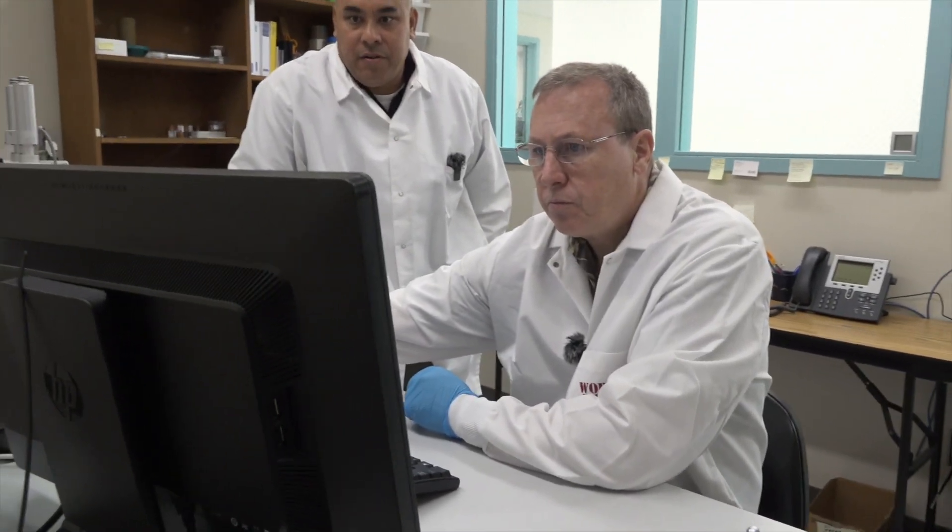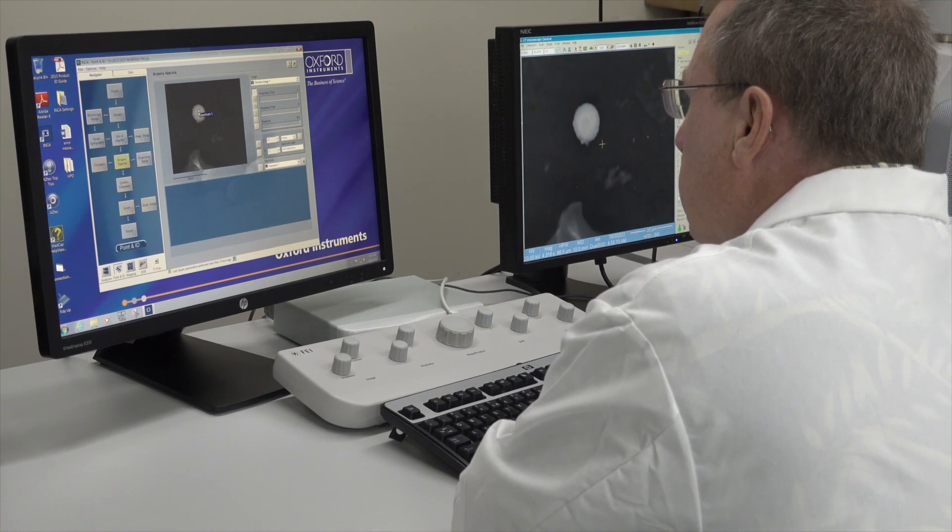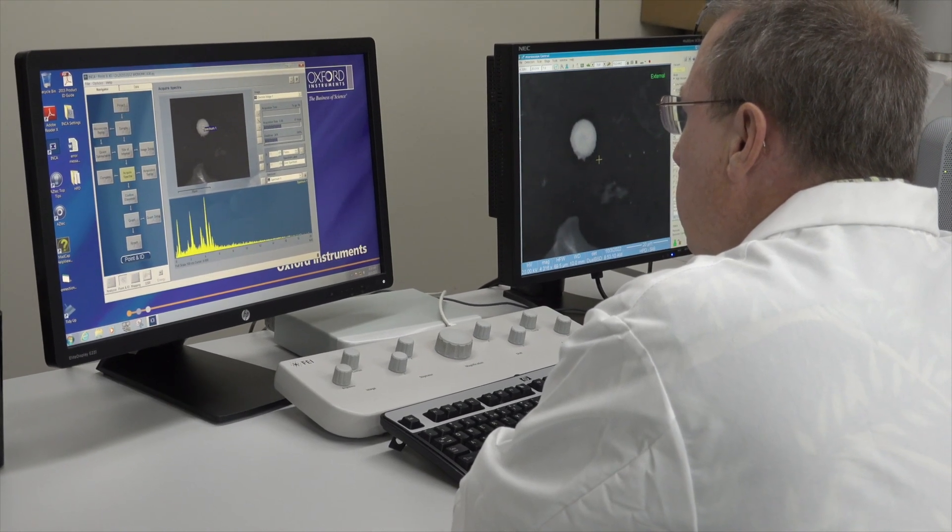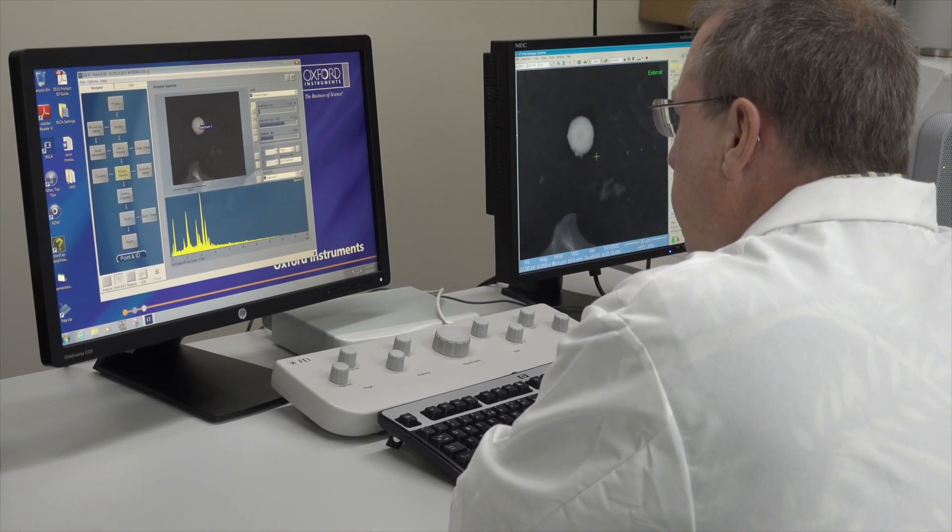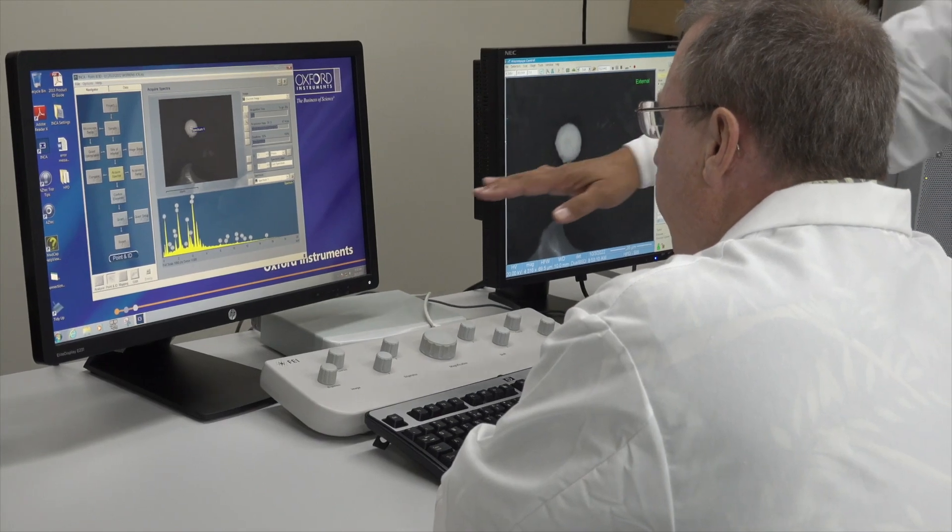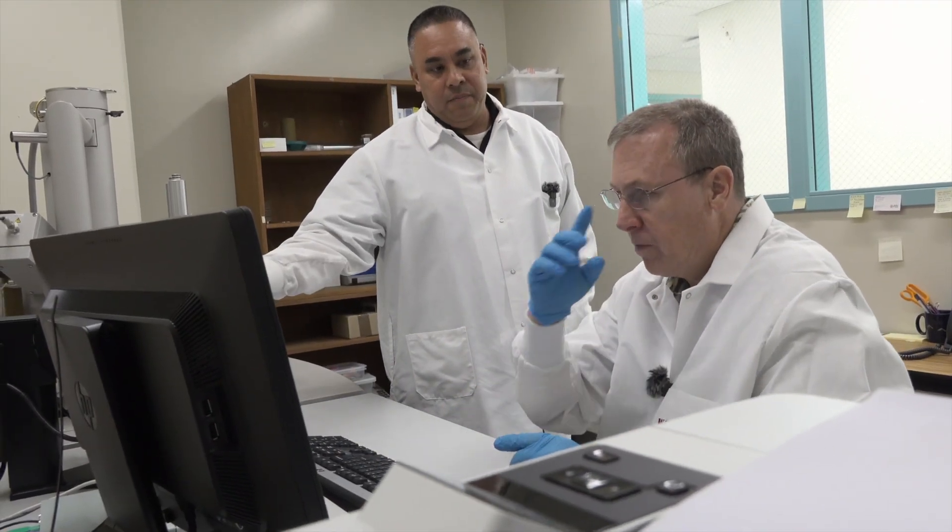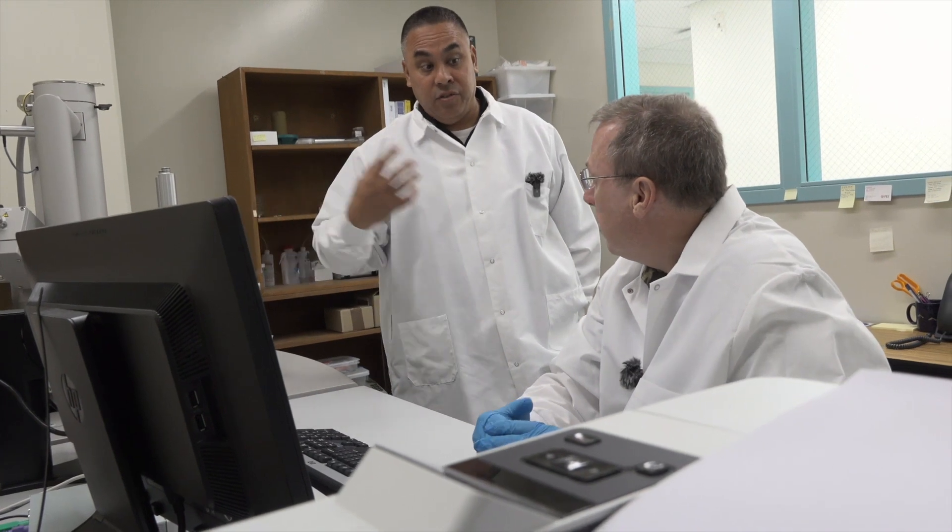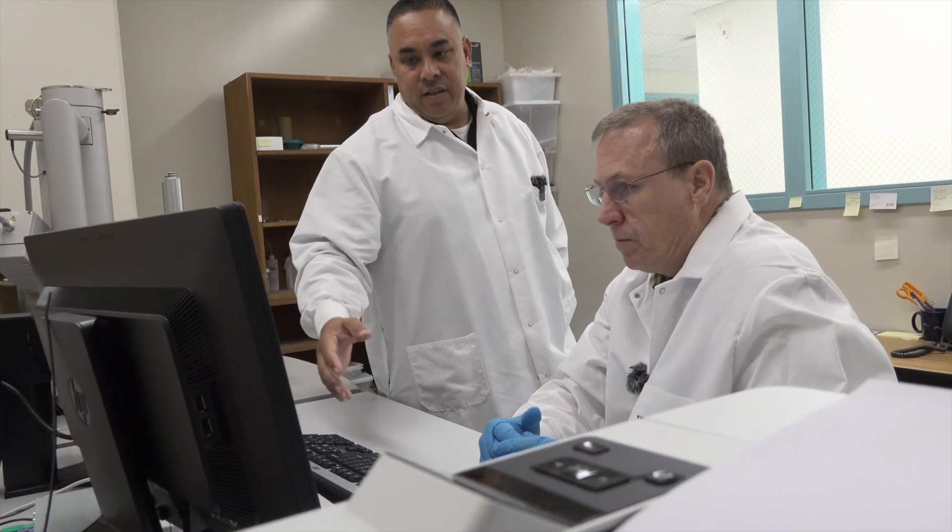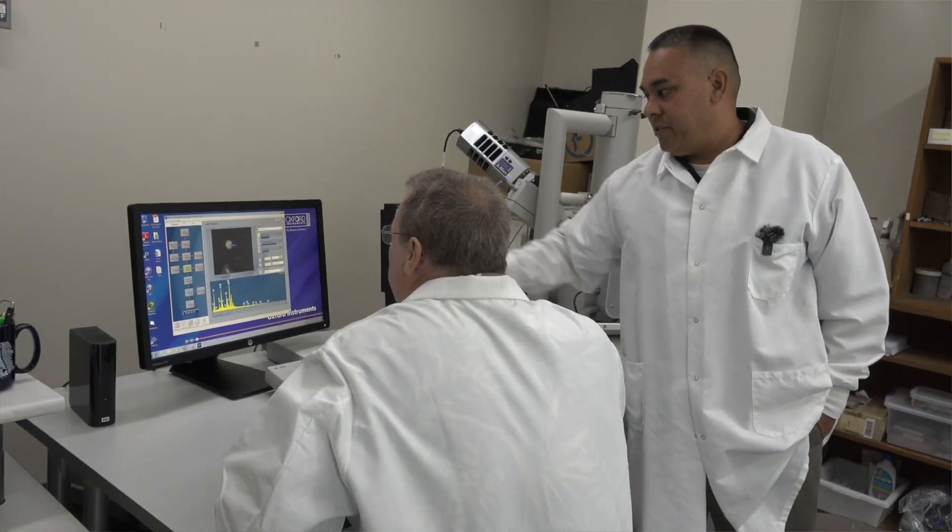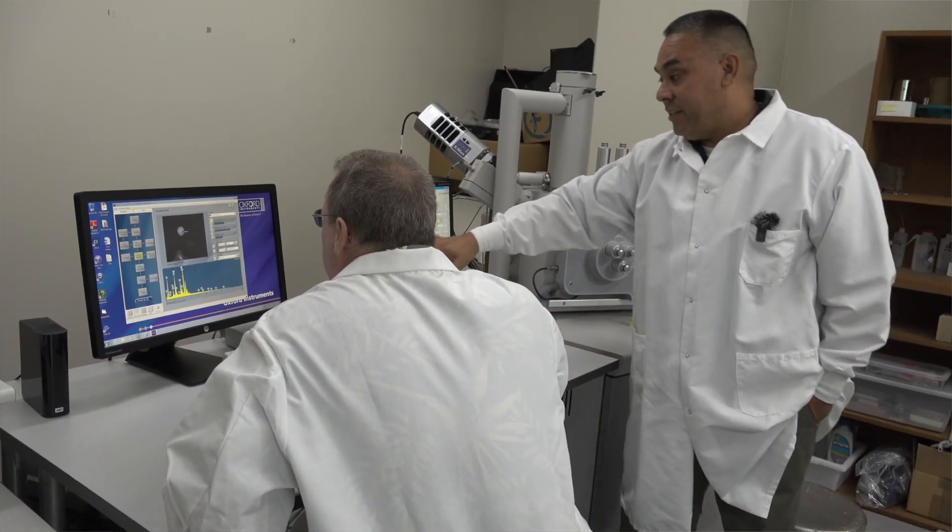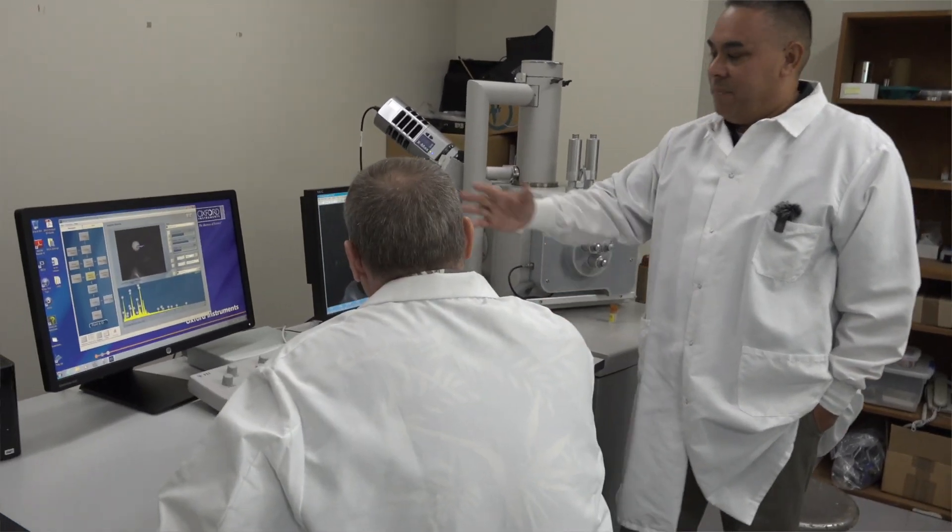So all you want to do is place the cursor right onto that particle right there and just click on it. Now it's going to pull up a spectra of what's in it. These are all energies that are coming off of this particle and every element has its own specific energies. And so lead, barium, and antimony. If this particle contains lead, barium, and antimony, it'll come up in the spectra.